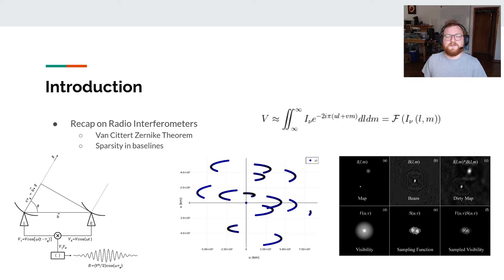This is called the Van Cittert-Zernike theorem, and it's an interesting proof if you want to get into it, but it basically shows this relationship.